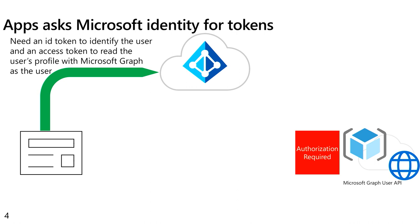First of all, my application sends you to Azure Active Directory and tells it: I want an ID token for this user. I want to be able to identify the user, and I need an access token so I can actually call this protected API. And with this access token, I want to be able to read the user's profile.